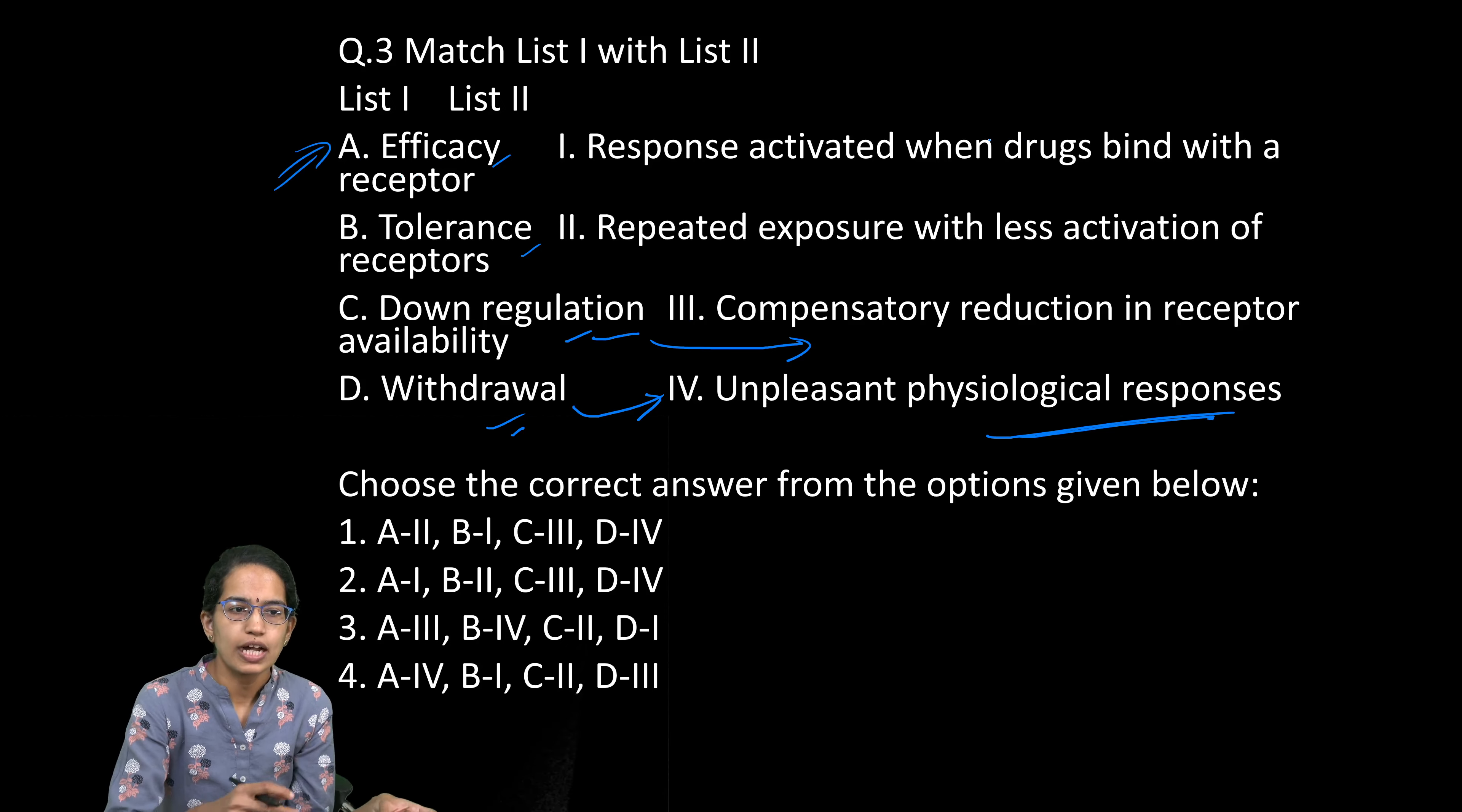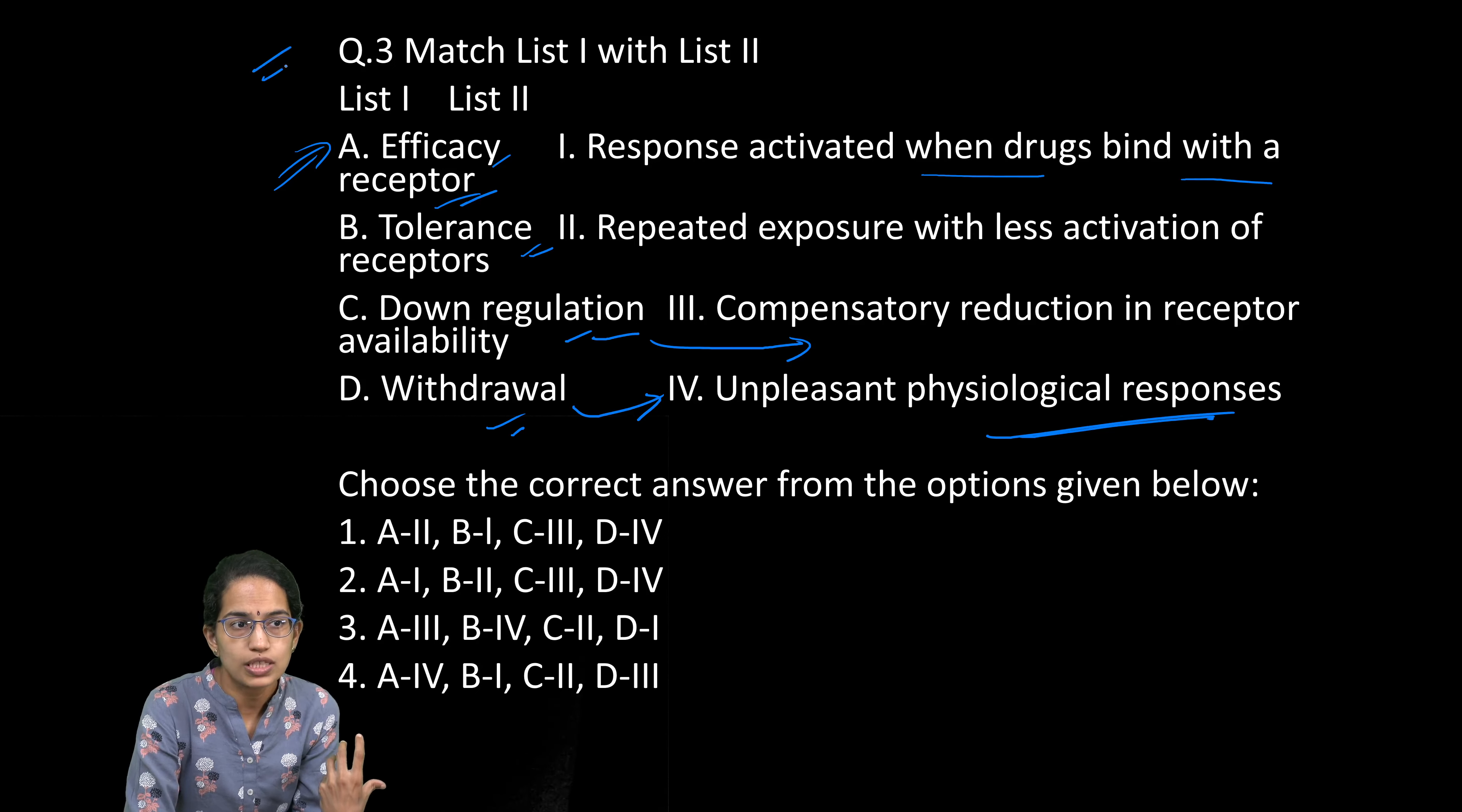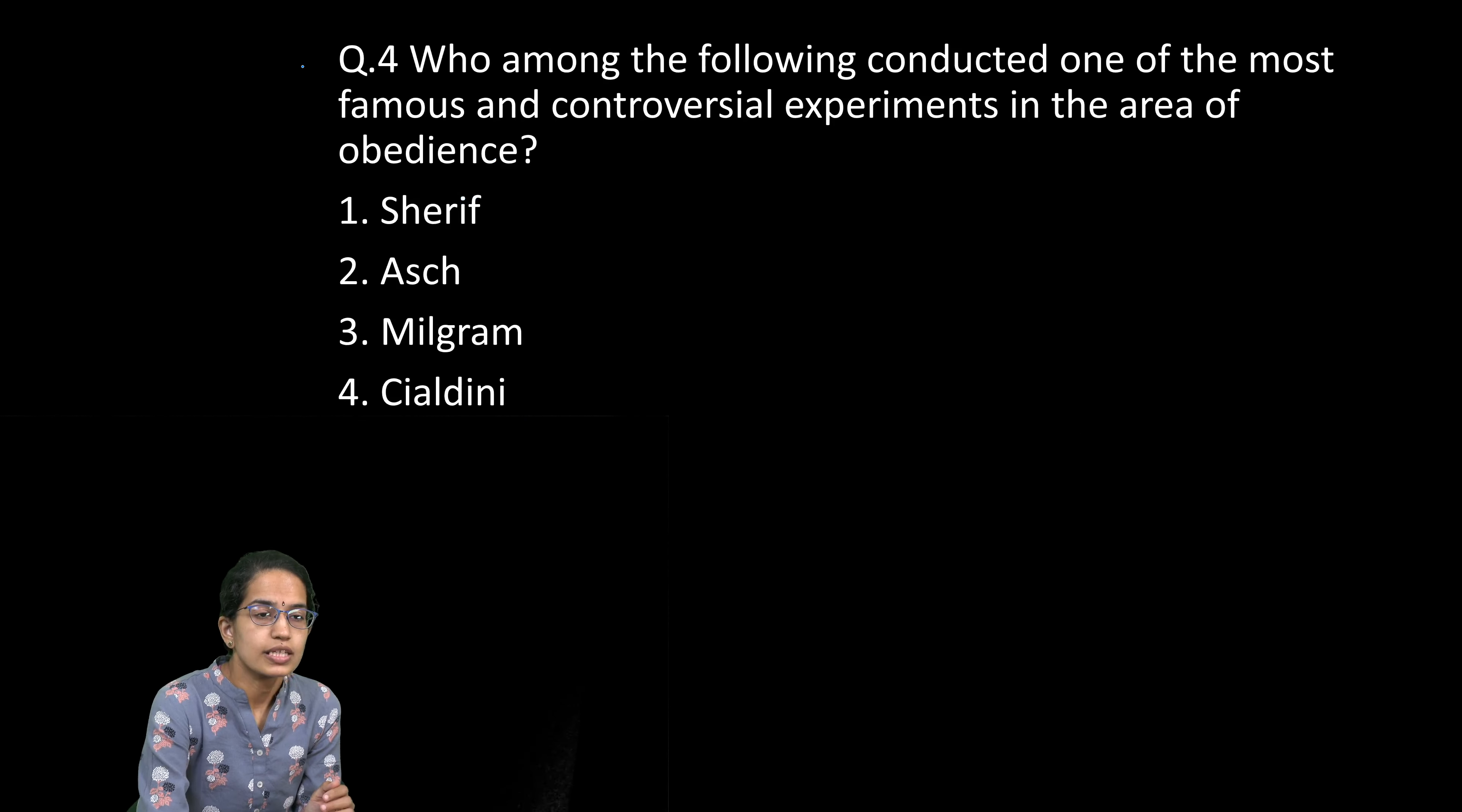How the drug binds with the receptor and provides the response is efficacy. Tolerance is repeated exposure, and how much less activation occurs with each exposure is tolerance. The next question is: who among the following talked about the experiment on obedience?